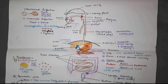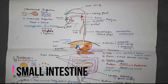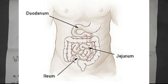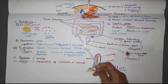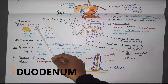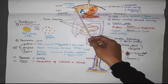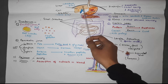Hello children, in this video I am going to explain the digestion process which occurs in the small intestine. The small intestine is divided into three parts: the duodenum, jejunum, and ileum. We will discuss how digestion takes place in each part, starting with the duodenum.